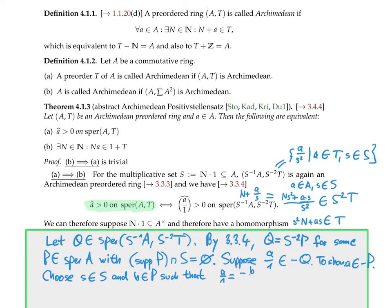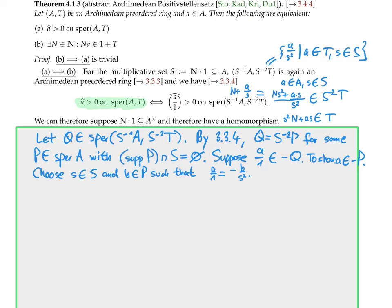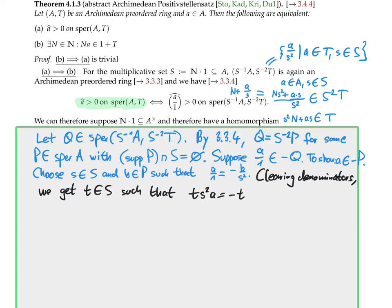One direction is completely trivial. For the other direction: if na/1 = 1 + a/s² with a in T and s in S, clearing denominators gives t in S such that ts²·na = ts² + ta. The right-hand side lies in 1 + T (up to adjusting n), so in this way I get from b' to b.